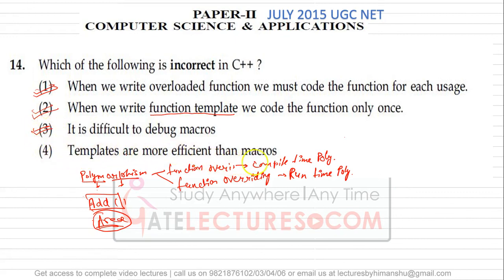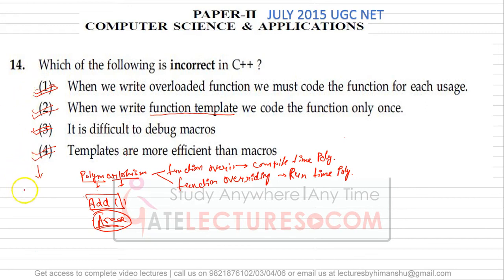Option four: 'templates are more efficient than macros' — this is also true, because type checking is done in templates and you can recursively call templates. So all four options are true, meaning there is no incorrect statement. In the NET 2015 Paper 2, this question was scrapped and marks were awarded to all candidates. Whenever a question is scrapped, everyone gets the mark for that question.